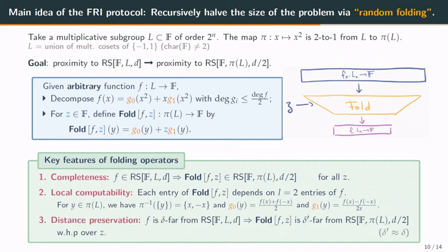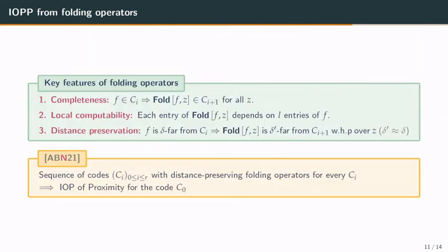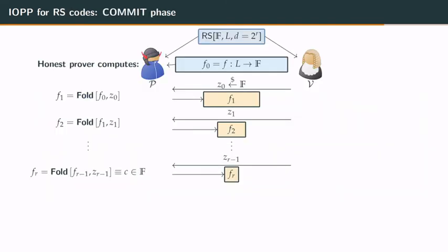Three properties are needed from the folding operator. Completeness: if f is in the first Reed-Solomon code, then all its foldings are in the second Reed-Solomon code for every z. Local computability: one entry of the fold can be computed from just two entries of the previous function. Distance preservation: if f is delta-far from the first Reed-Solomon code, then with high probability over z, the fold of f at z remains far from the second Reed-Solomon code — with delta-prime roughly equal to delta. Once you have a folding operator fulfilling these three properties, you can design a proximity IOPP for any code in a sequence.